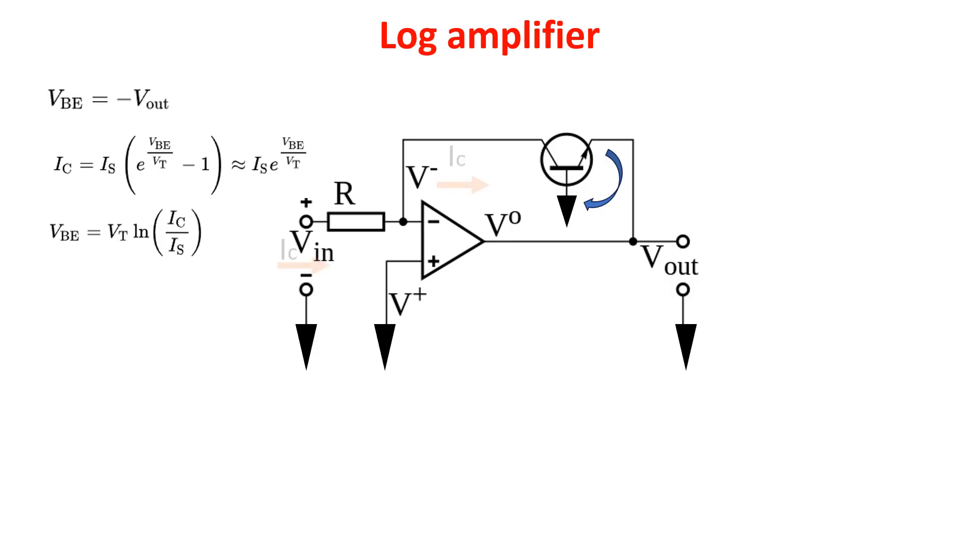Knowing that the current IC has to be the same in these two branches because no current goes in the op-amp, we can say that IC is equal to Vin divided by R because V- is a virtual ground and Vin drops entirely on R.